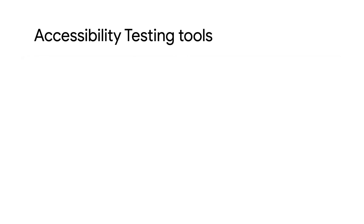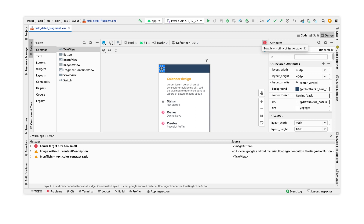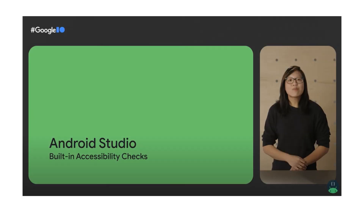Now that we've talked about some of the things to look for when testing accessibility in an app, let's look at some tools that are available to help you with testing. Android Studio contains built-in accessibility checks to help make your layouts more accessible. When using the Layout Editor, you can click on the Issue Report button to see accessibility-related issues, including suggestions on how to fix them. To learn more about the checks in Android Studio, check out the video What's New in Accessibility for Developers.